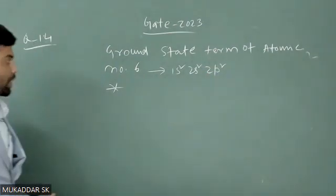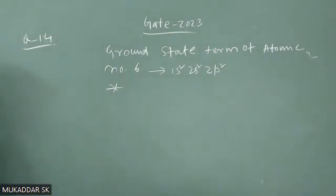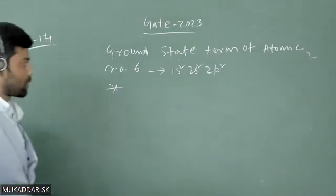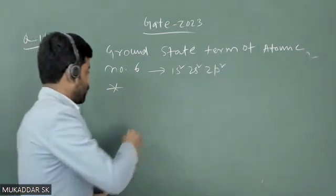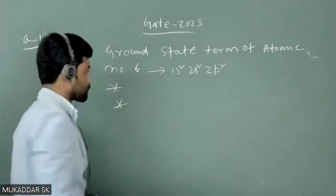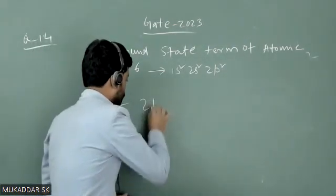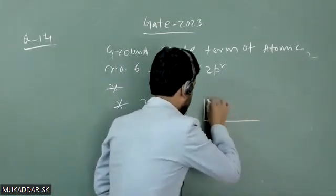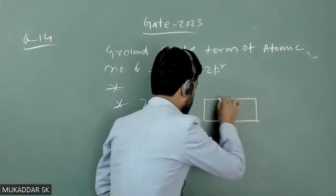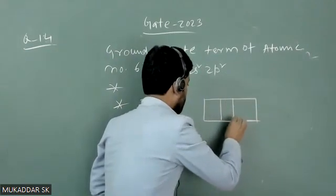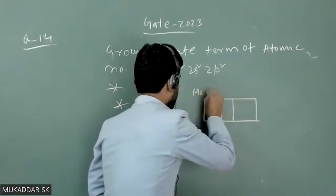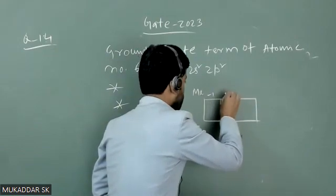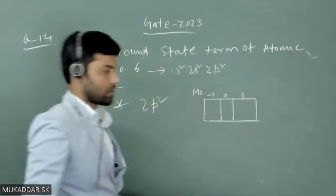They are basically equivalent electrons and for equivalent electrons to calculate that ground state term we will use Hund's rule. For 2p² - for p orbital we will have ml value that will be minus 1, 0, 1.